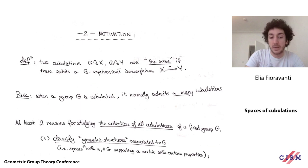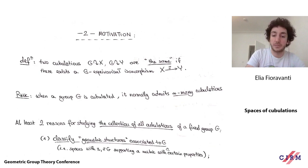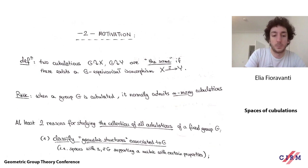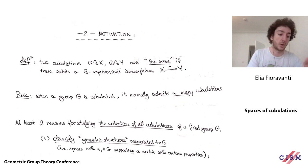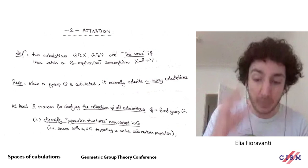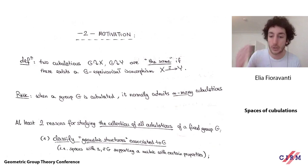One reason is a classic theme in mathematics: whenever you have a group, it is interesting to study geometric structures associated to it — topological spaces where the fundamental group is G, additionally equipped with a metric of some specific kind. A natural parallel is with the theory of representation varieties: studying discrete faithful representations of a discrete group into some semi-simple Lie group is equivalent to understanding all manifolds whose fundamental group is G equipped with a locally symmetric metric.